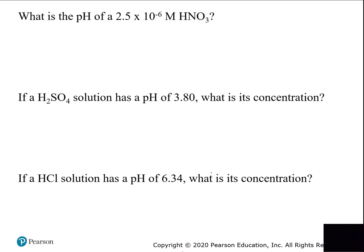Let's practice another one. What is the pH of a 2.5 × 10⁻⁶ molar nitric acid solution? pH equals negative log of the acid concentration. On a graphing calculator, hit minus, then log, then the acid concentration and equals. On an old calculator, you have to put the number in first — you can't just hit log or it will give you an error.